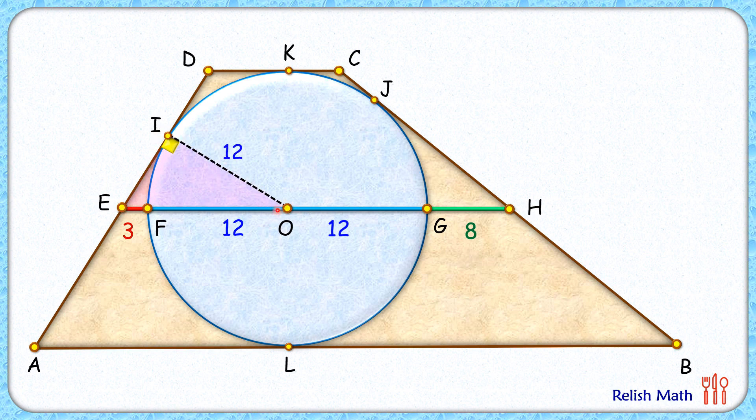Now this triangle is a right angle triangle where the hypotenuse length is 3 plus 12 or 15 cm. Applying Pythagoras theorem we can find the length EI as 9 cm.